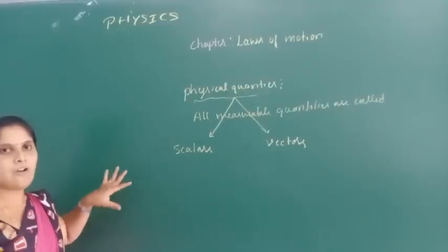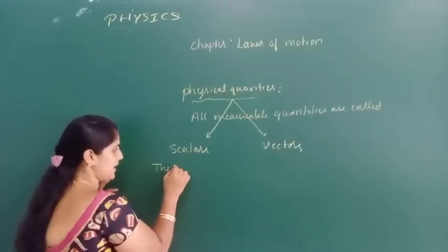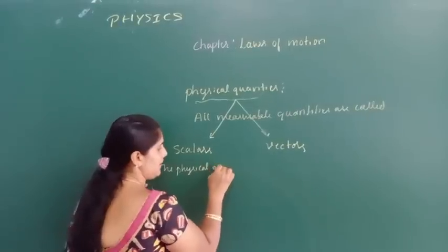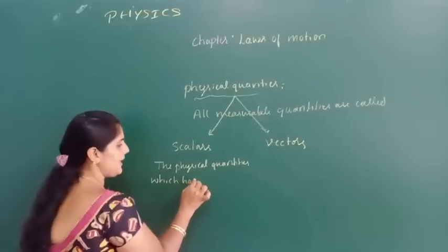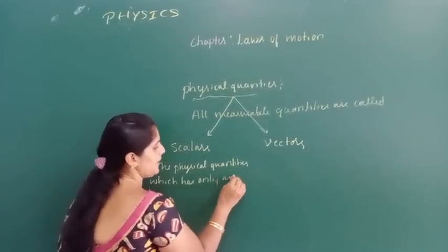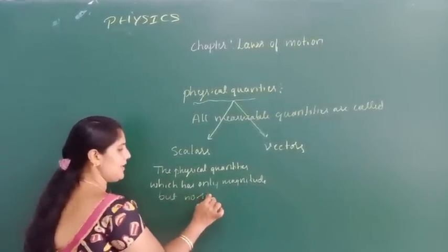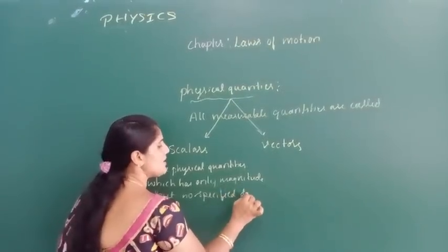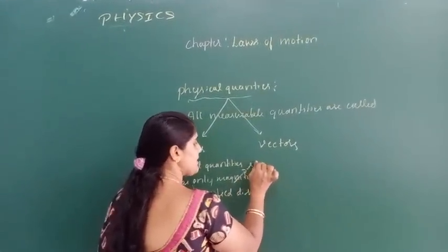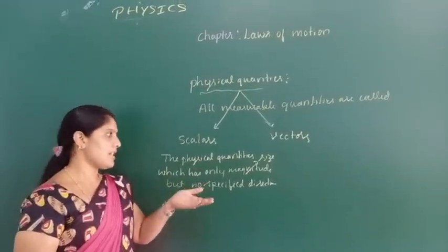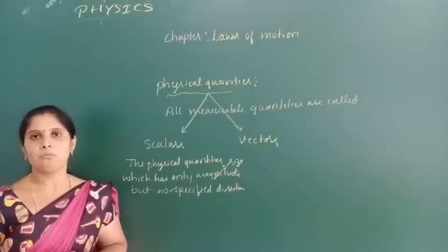Scalars means the physical quantity which has only magnitude but no specified direction. Magnitude means size — it does not indicate the direction of motion. That is called scalars.